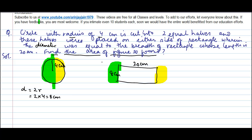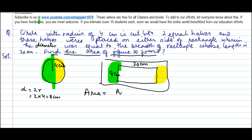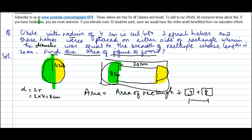We are required to find out the area of this figure. The area is equal to the area of the rectangle plus the yellow portion plus the green portion. The yellow plus green portion together is equal to the area of the circle, because the circle itself has been broken into two equal halves and placed on either side.